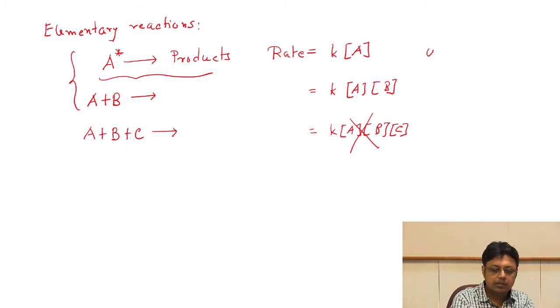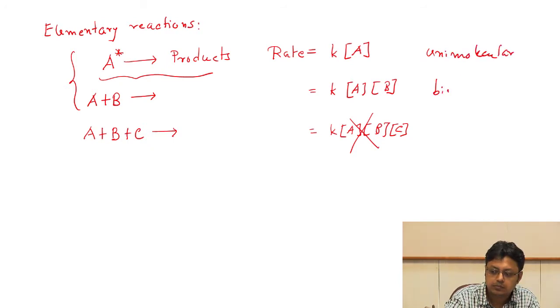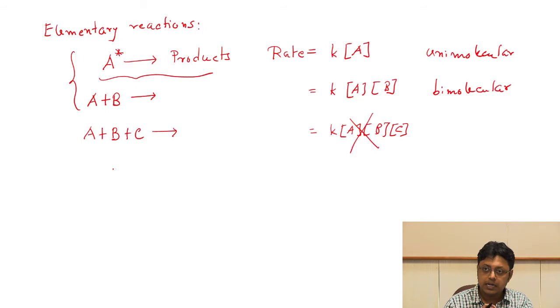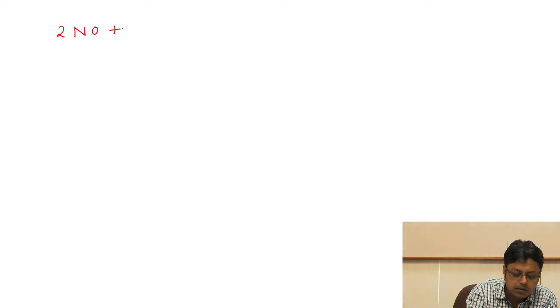So if we find a reaction involving three species giving rise to a product, we cannot say it is elementary and we cannot write the rate as K[A][B][C]. It must be a composite reaction which can be broken into elementary bimolecular as well as unimolecular reactions. Elementary reactions are always classified as unimolecular and bimolecular. We will discuss both, but first we will start with bimolecular reactions.